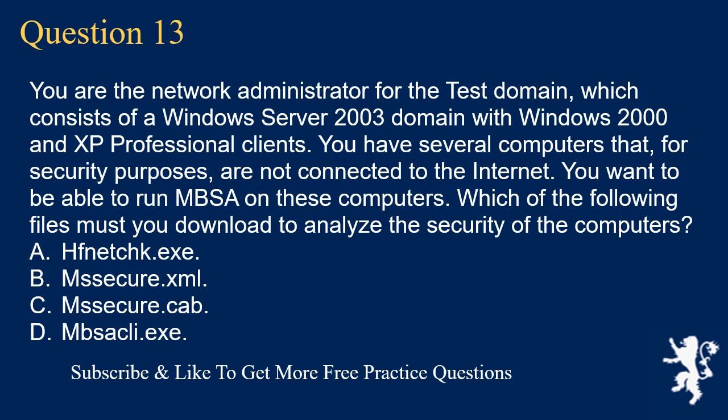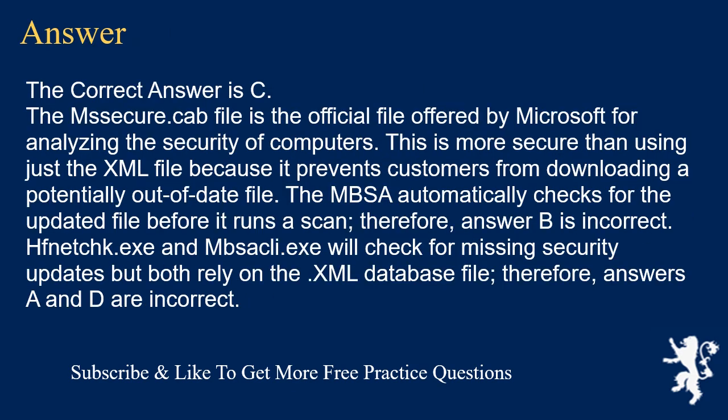Question 13. You are the network administrator for the test domain, which consists of a Windows Server 2003 domain with Windows 2000 and XP Professional clients. You have several computers that, for security purposes, are not connected to the internet. You want to be able to run MBSA on these computers. Which of the following files must you download to analyze the security of the computers? A. Fetch.exe. B. Secure.xml. C. Secure.cab. D. Mssecure.exe. The correct answer is C. The Mssecure.cab file is the official file offered by Microsoft for analyzing the security of computers. This is more secure than using just the XML file because it prevents customers from downloading a potentially out-of-date file. The MBSA automatically checks for the updated file before it runs a scan. Therefore, answer B is incorrect. Fetch.exe and Mssecure.exe will check for missing security updates but both rely on the XML database file. Therefore, answers A and D are incorrect.